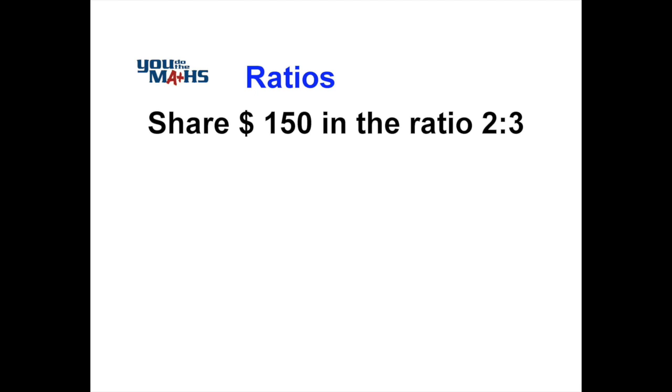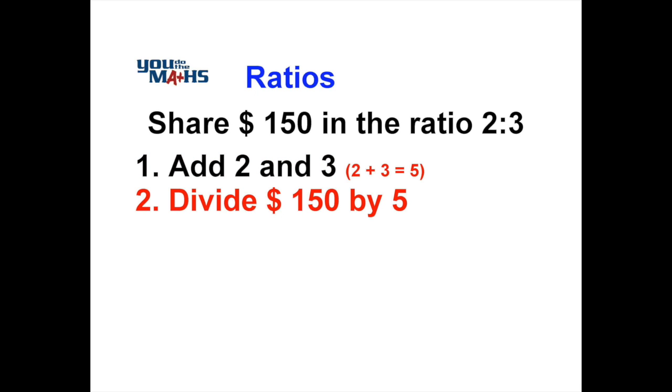The way we do it is we add up the amounts in the ratio, two and three. What we get when we add up two and three is five. That tells us the total amount of parts. We then divide $150 by the total number of parts, which in this case is five.